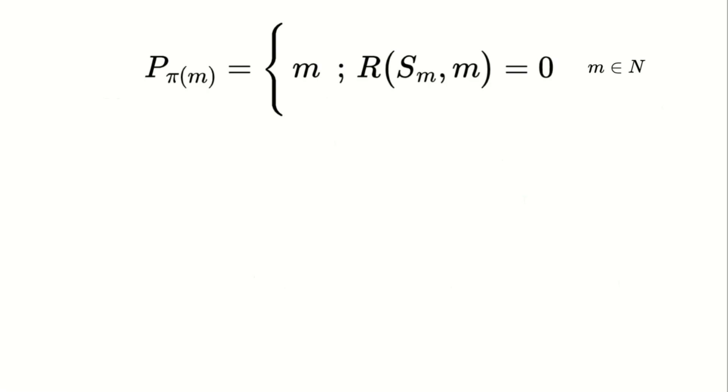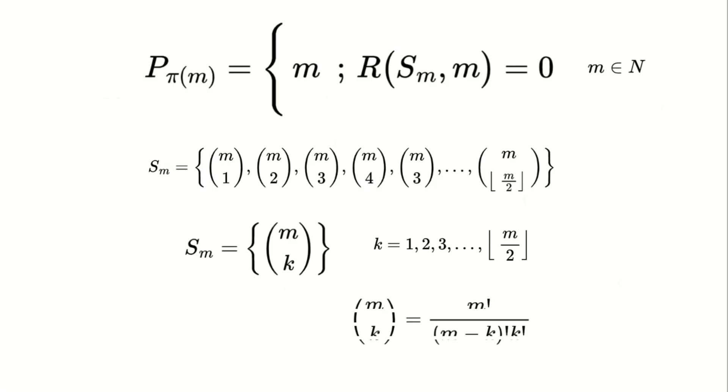Let's break this down further. First, S_m represents the set of all combinations of m from one to the floor of m over two. Next, we use the combination formula to calculate m choose k. This is equal to m factorial divided by (m minus k) factorial times k factorial.